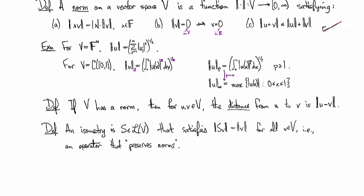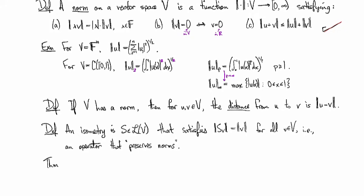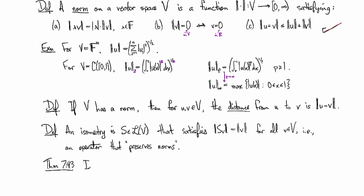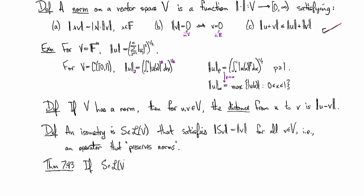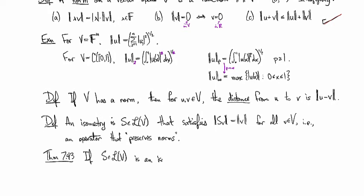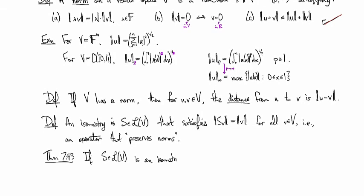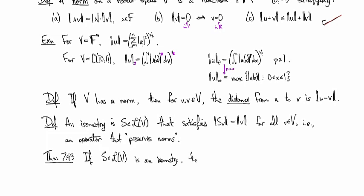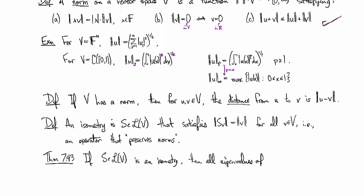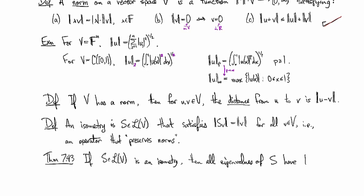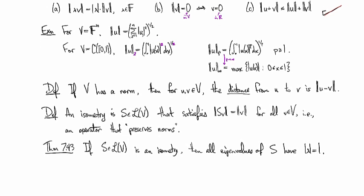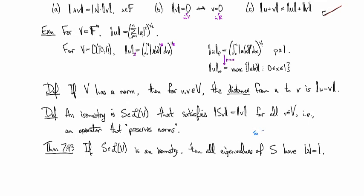So then we have a theorem that goes along with this. That is that isometries have eigenvalues with magnitude one.